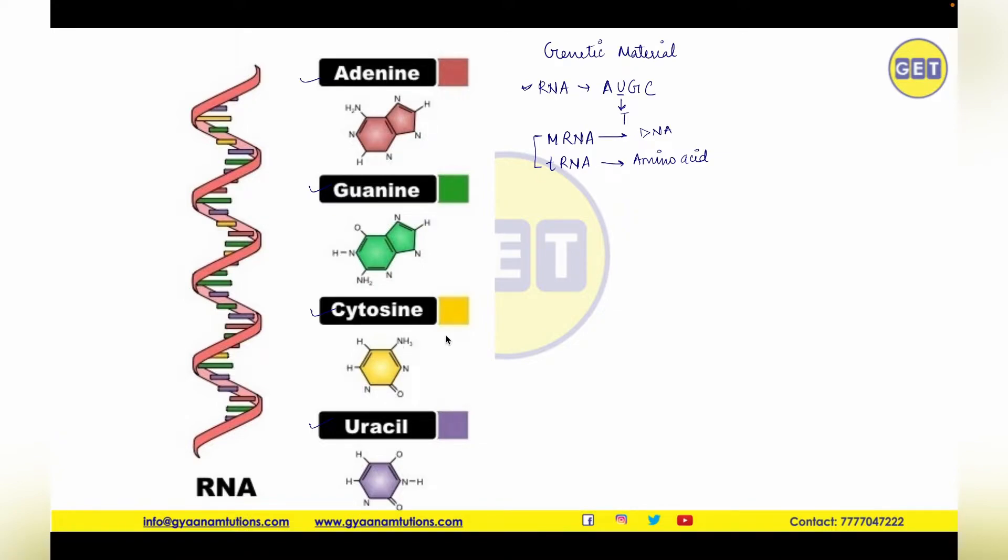Now let us understand more about codons and anticodons. As you can see, it is a decoded RNA sequence. So it is going to have A, U, G, C. A is always going to complement with U, and U is always going to complement with A. Similarly, G is going to complement with C, and C is going to complement with G. So in simple words, A and U are best friends, and G and C are best friends.